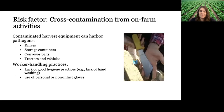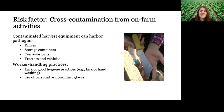The final pre-harvest risk factor is cross-contamination from on-farm activities. Harvest equipment — knives, storage containers, tractors, and vehicles — can harbor pathogens. Worker practices can also spread pathogens, such as lack of good hygiene, not having access to proper toilet facilities, or not being able to wash hands. This is particularly important for viral pathogens like hepatitis A and norovirus.